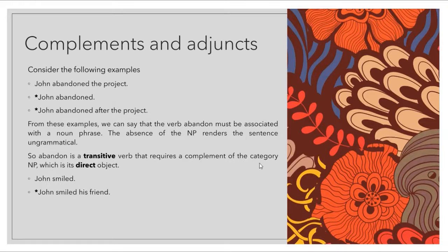From those examples we can say that the verb 'abandon' must be associated with a noun phrase (NP). The absence of the NP renders the sentence ungrammatical. So 'abandon' is a transitive verb that requires a complement of the category NP, which is its direct object. That's why you need to revise your S2 lessons — you need to know the function of these elements to the verb in order to place them correctly in a tree diagram.